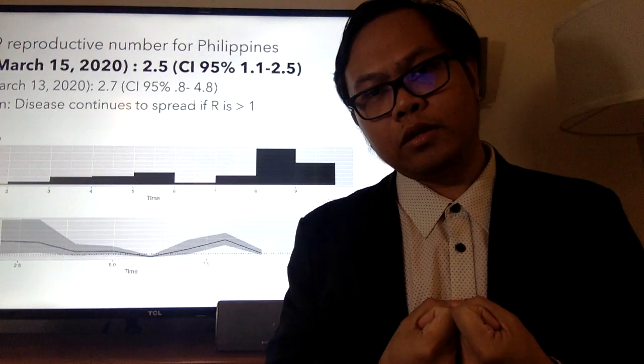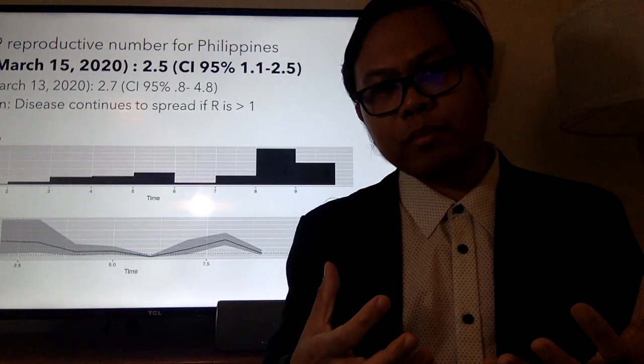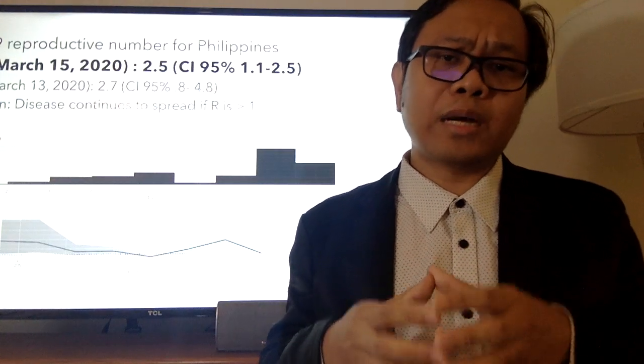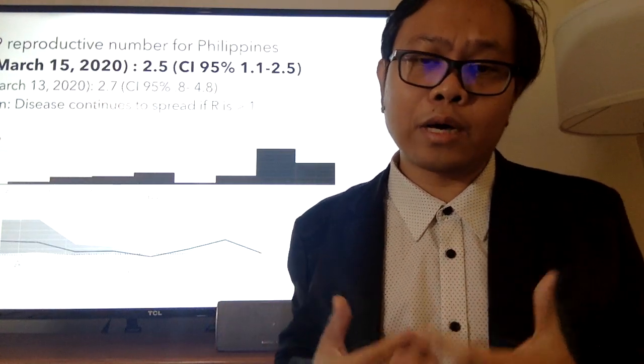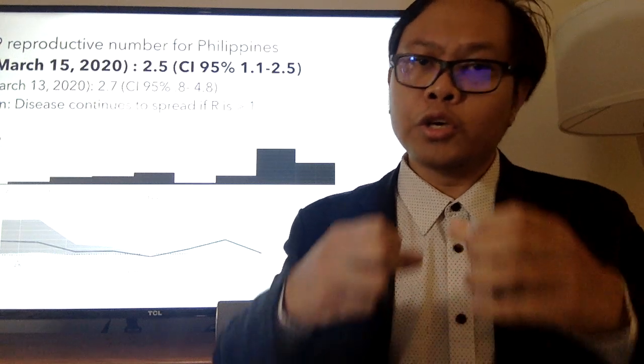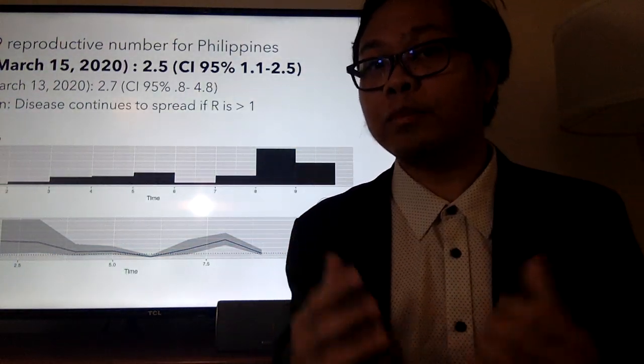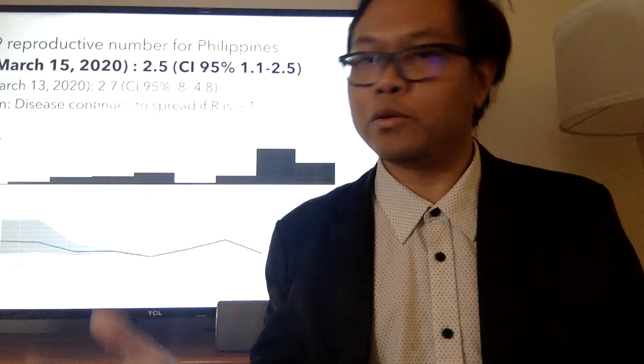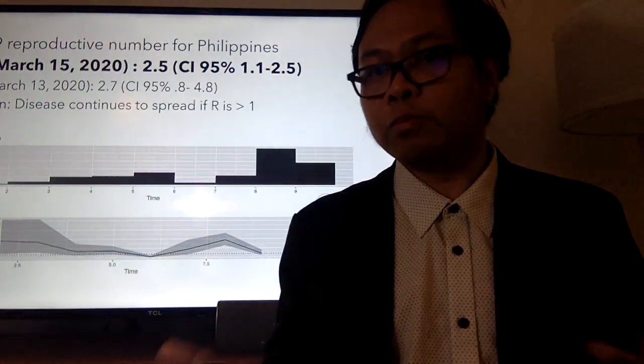Anong ibig sabihin nun? Kapag ang reproductive number ng isang sakit ay mas mataas pa sawan, ibig sabihin mas kumakalat siya. As of March 15, based sa data na nakuha sa nirelease ng DOH, kinocompute ko yung reproductive number, which is a measure kung gaano nakakahawa yung sakit, yung transmission parameter niya.